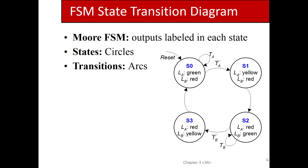What if we were designing a controller for a soda machine? The states would represent how much money the user had put in, or credit to be returned as change. Say the machine charges 25 cents and accepts a nickel, dime, or quarter — so the input alphabet is N, D, Q. We'll assume only one can be asserted at a time because you can only put one coin in per clock cycle.